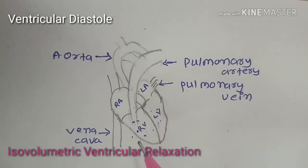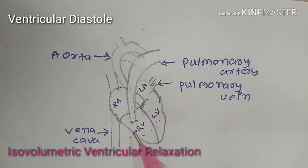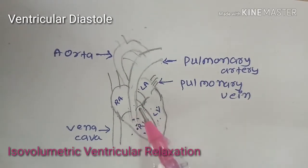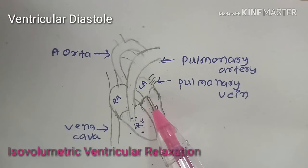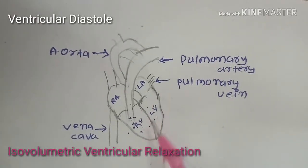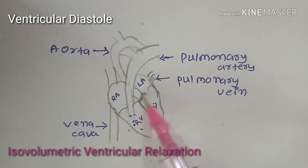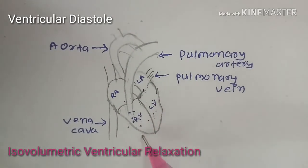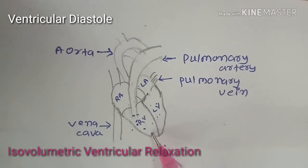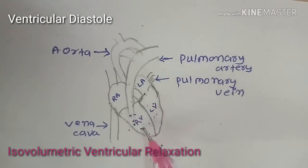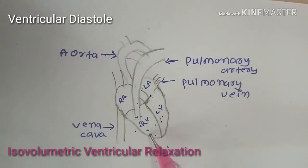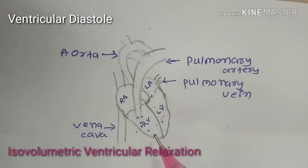The next phase is isovolumetric ventricular relaxation, which follows protodiastole. Here the semilunar valves are closed and AV valves are not yet opened. So the ventricle is relaxing continuously while behaving like a closed chamber. In spite of continuous relaxation, there is no change in volume. Thus it is called isovolumetric ventricular relaxation.